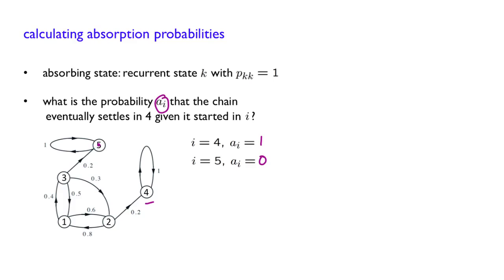If you start in 4, the probability that you end up in 4 is 1. And if you start in 5, the probability that you end up in 4 is 0. There is no way that you can go from 5 to 4. What about the other cases? Well, it's not so clear.